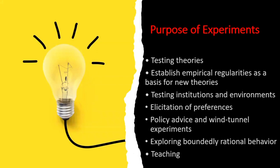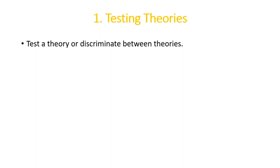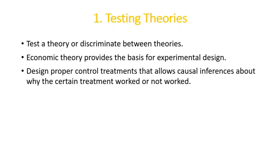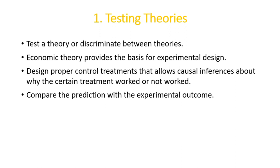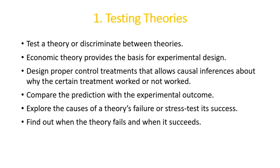First is testing a theory. We can use experiments to test a theory or to discriminate between theories. Economic theories provide the basis of experimental design. We can design proper controls and treatments that allow causal inferences about why a certain treatment worked or did not work. We then compare our predictions about the outcome with the experimental outcome. After analyzing experimental outcomes, we explain the causes of a theory's failure or stress-test its success. In cases where the theory fails sometimes and succeeds other times, economists must find out when it fails and under what conditions it succeeds.